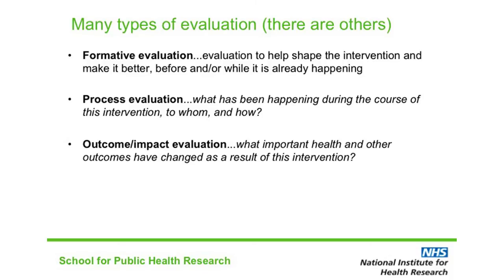The final type of evaluation is outcome or impact evaluation. This is where we try to work out what kind of changes happen to people — usually people, for public health — as a result of the intervention. Unlike formative evaluation, outcome evaluations often try to avoid the observer effect, so they avoid reporting findings too early. This is usually fairly easily done because you want to measure your impacts after the intervention is complete, if you have a clear completion date.